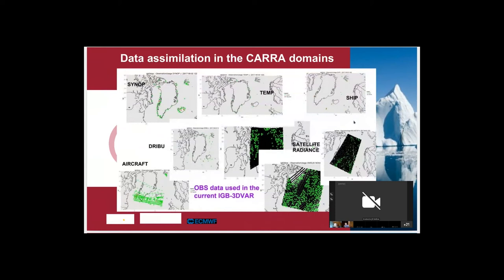Classically in data assimilation — as we already heard in the previous presentation — you have the synoptic observations, you have radiosondes (or balloons, which is maybe a better word), you have ships sailing around in the ocean, drifting buoys, and aircraft data. Many airplanes go across Greenland, though at high altitude. And we have satellite radiance data — microwave and infrared sounders — scatterometer winds, and also radio occultation data.